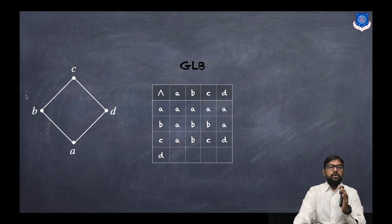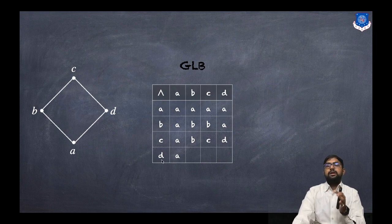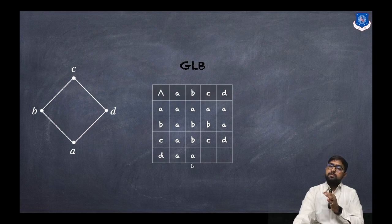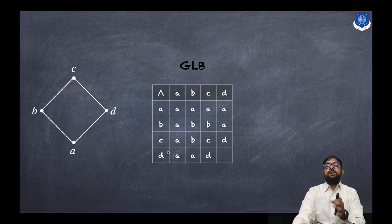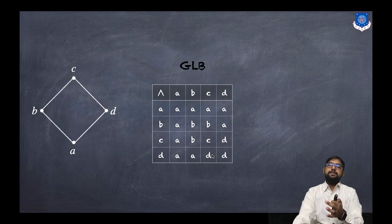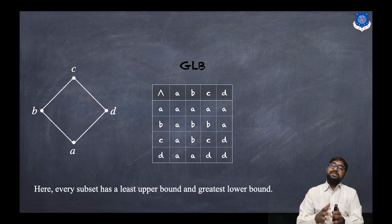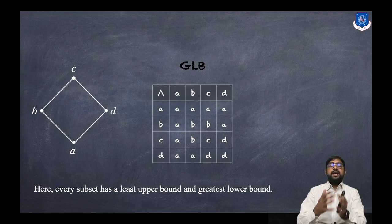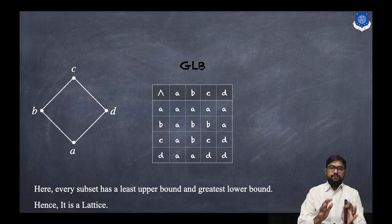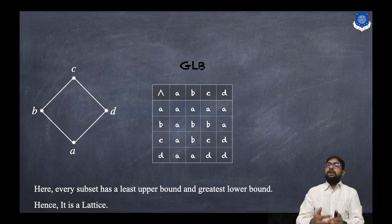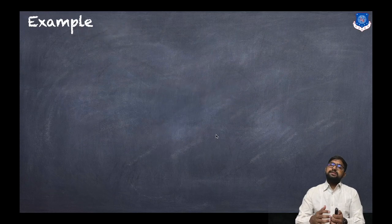For d: d and a is a, d and b is a, d and c is d, and d and d is d. As you can see, every subset has both a least upper bound and a greatest lower bound, so we can conclude that this Hasse diagram represents a lattice.